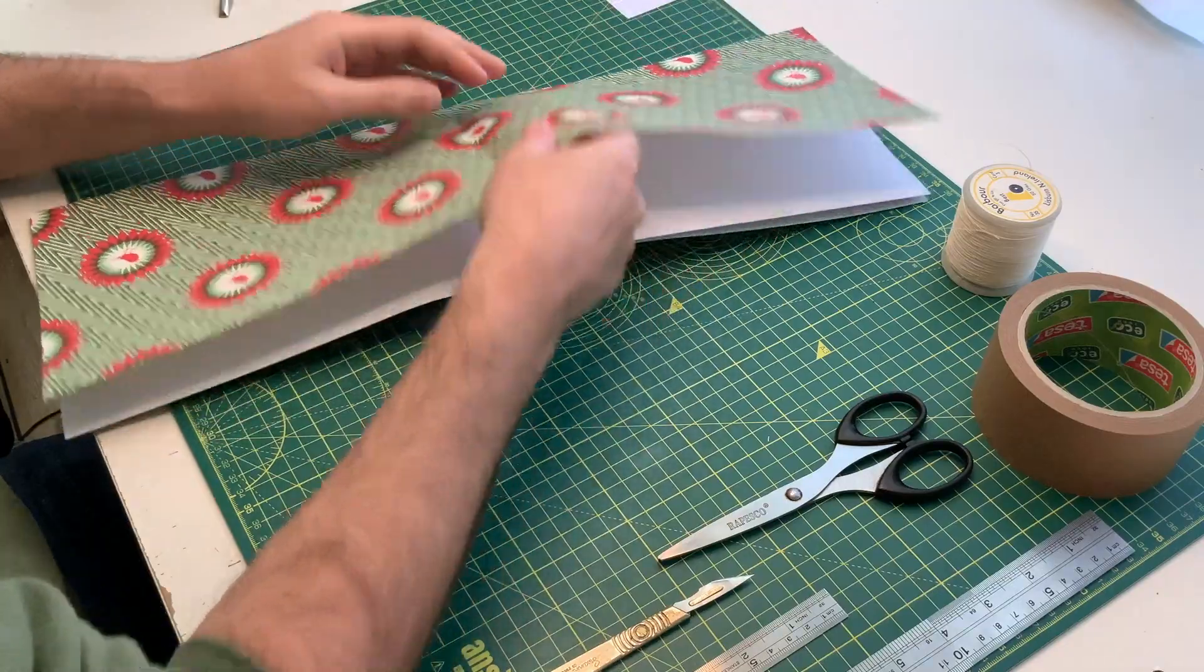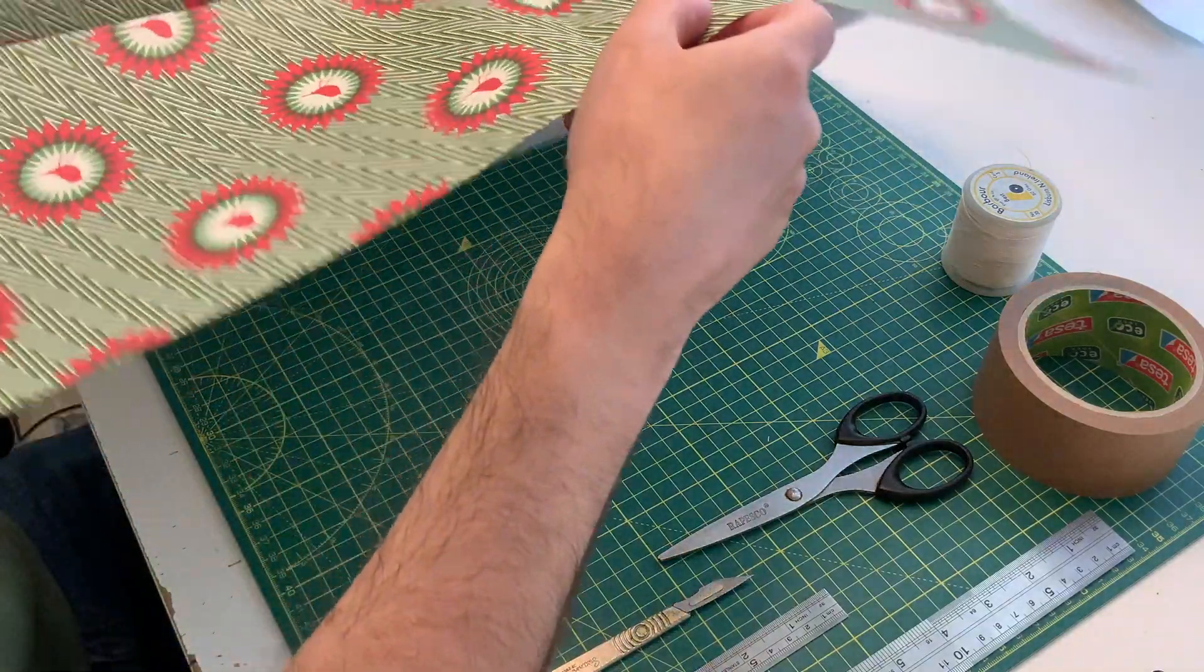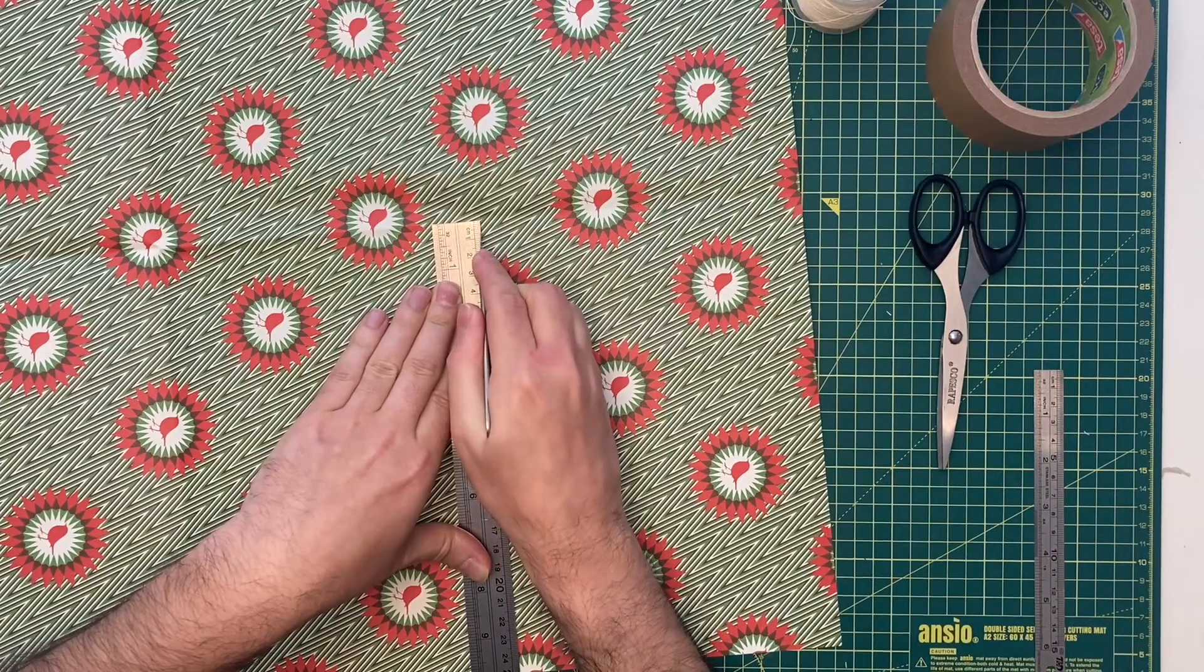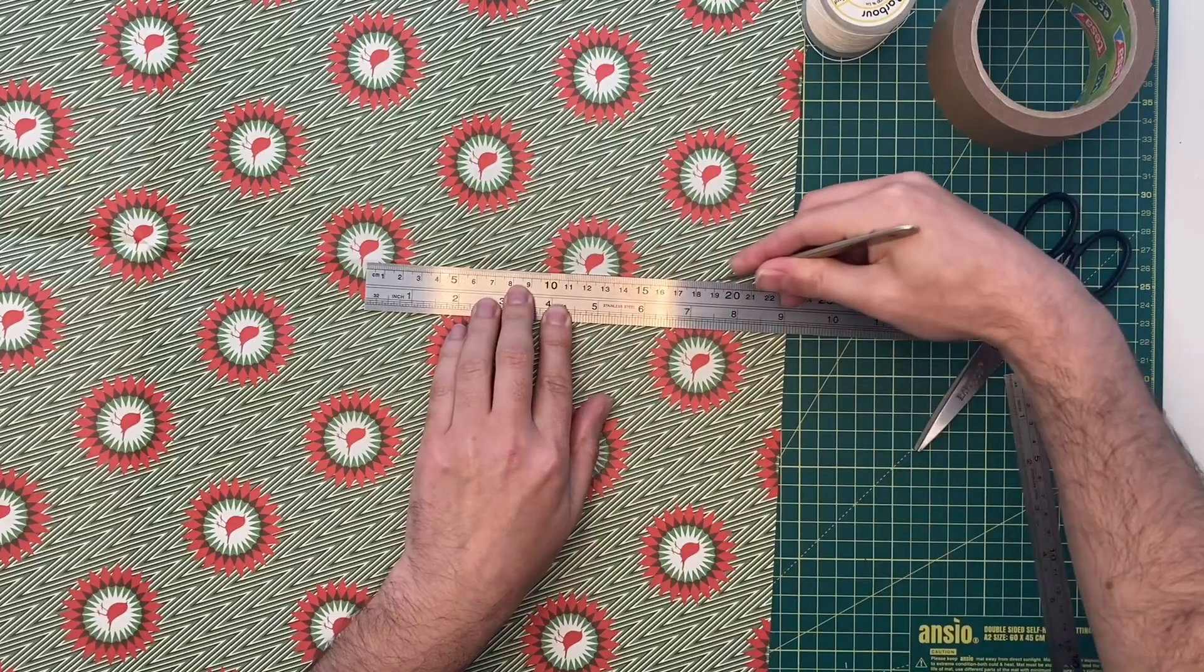Begin by cutting your wrapping paper into a rectangle 25 cm long by 17.5 cm wide.